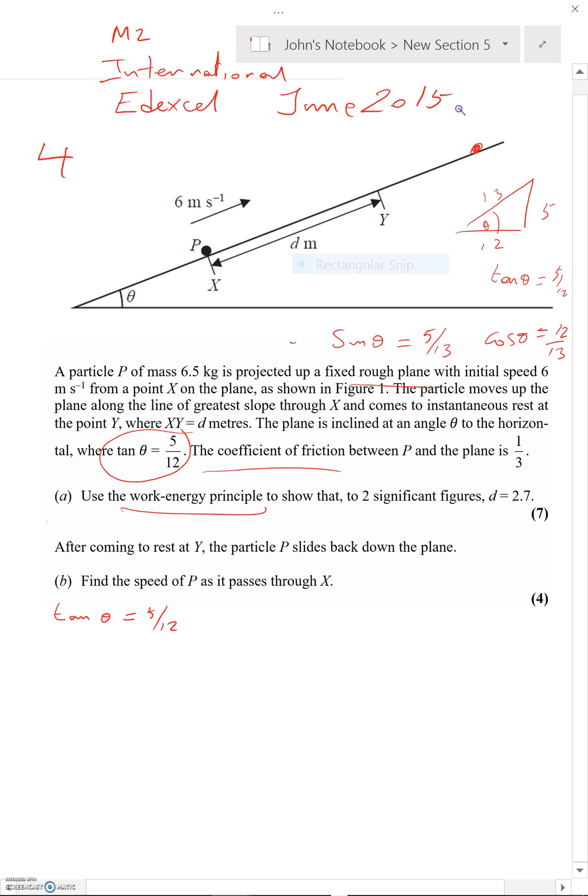Let's just draw this. So obviously this is there, we've got a reaction force there, we've got the weight of the particle, and as far as I can see, the only other force is the friction going downwards—nothing else.